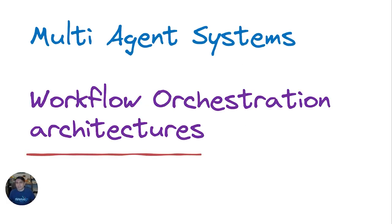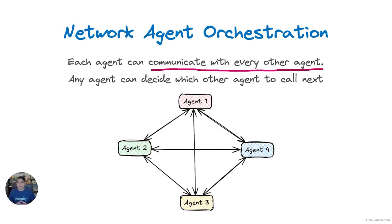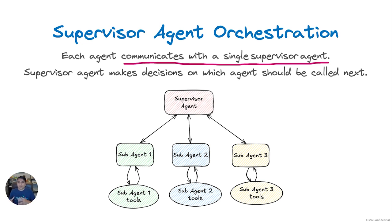With that intro, let's take a look at some of the agentic orchestration approaches that are out there. There are three prominent types of workflow orchestrations in multi-agent systems. The first is a network-based agentic orchestration, where each agent can communicate with another agent in the system, allowing for a very dynamic and flexible system. The second approach is a supervisor agent orchestration system, where each agent is connected to a supervisor agent and the central supervisor manages the task flow by deciding which sub-agents are invoked based on the user query and response.